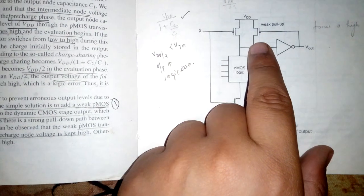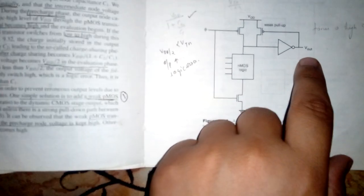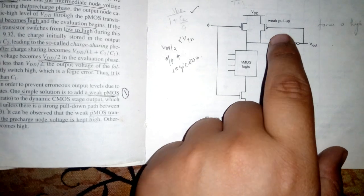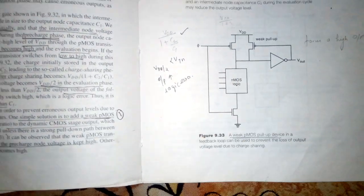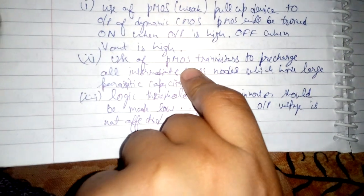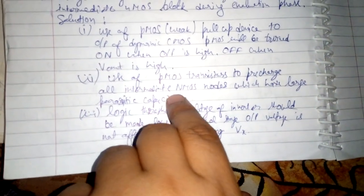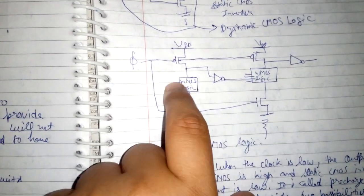This is the PMOS used in the feedback path of the output. When Vout is high, the PMOS inverts the value and is turned off; when the pre-charge voltage is high, it will be turned on. The second solution is to use PMOS transistors to pre-charge all intermediate NMOS nodes that have larger parasitic capacitance — we can place PMOS transistors to pre-charge the NMOS logic block nodes with high parasitic capacitance.